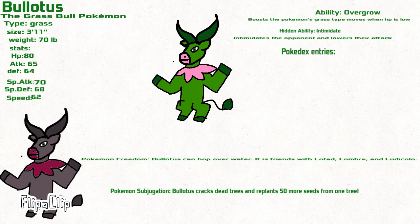Bull Lotus hop on water. It is friends with Lotad, Lombre, and Ludicolo. Bull Lotus crack dead trees and can plant 50 seeds from one single tree.